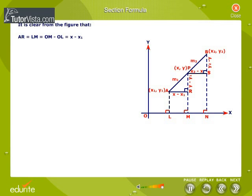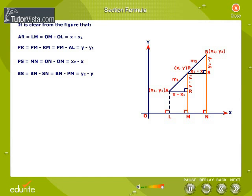It is clear from the figure that AR is equal to LM is equal to OM minus OL, which is equal to X minus X1. PR is equal to PM minus RM is equal to PM minus AL, which is Y minus Y1. PS is equal to MN is equal to ON minus OM, which is X2 minus X. And BS is equal to BN minus SN is equal to BN minus PM, which is Y2 minus Y.